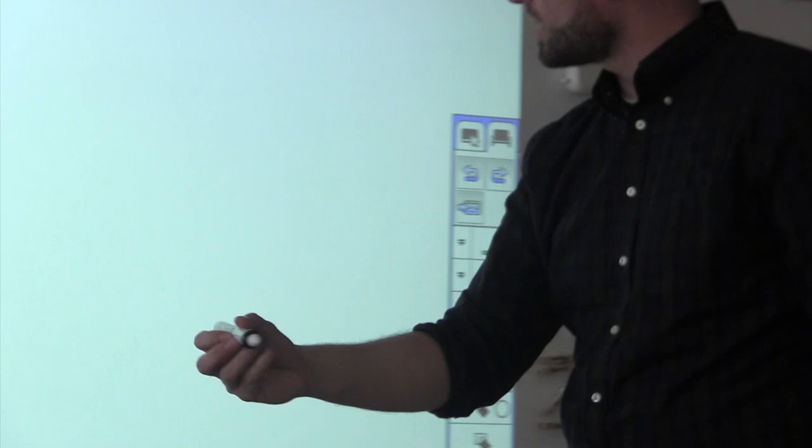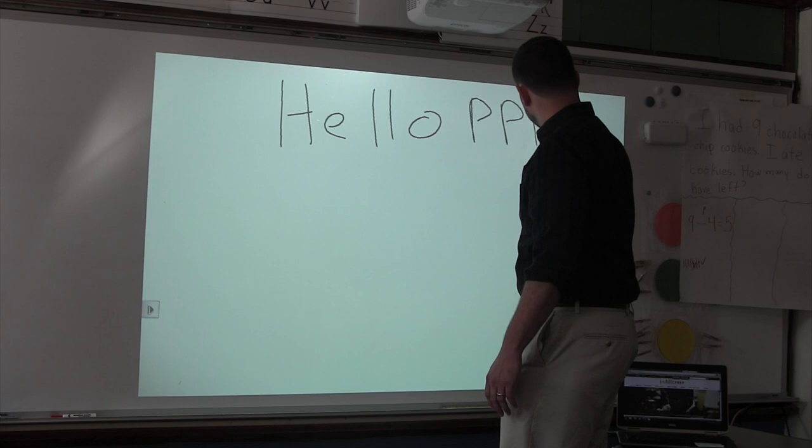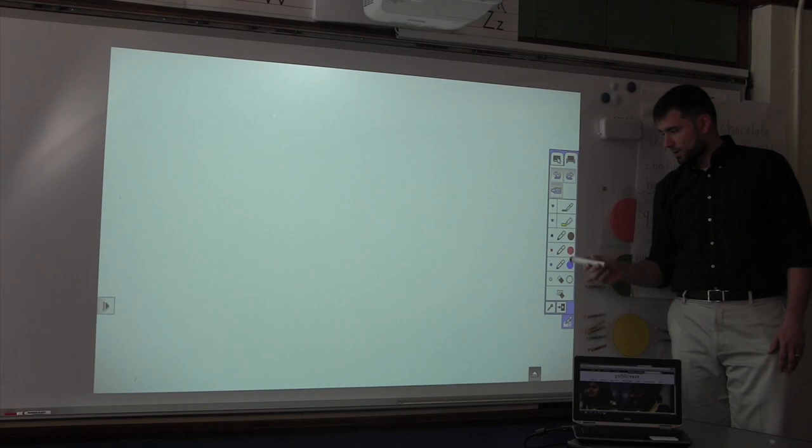And again, if you need to erase, click this lowest one, lowest icon and select yes. There are other icons on the right hand side which are different pen colors, blue, red, black, and you can select thickness of your line and different colors.